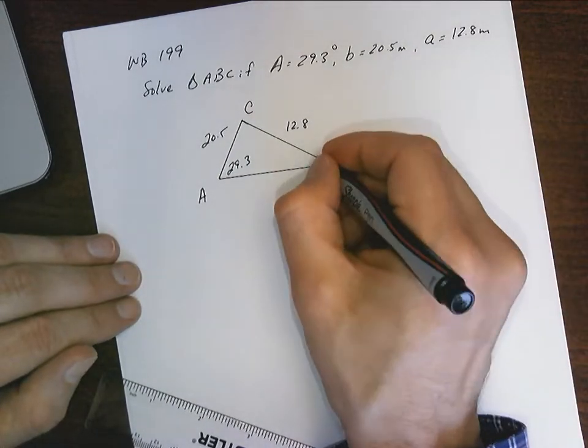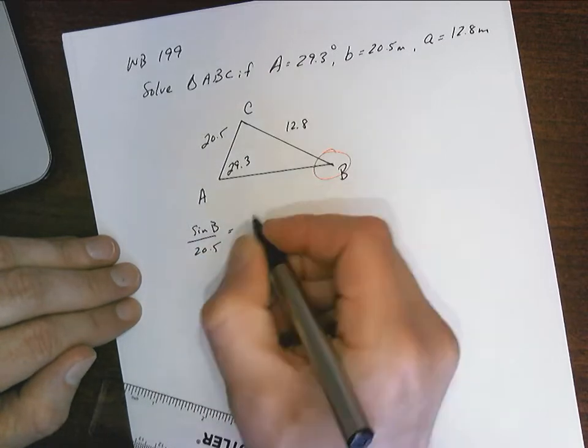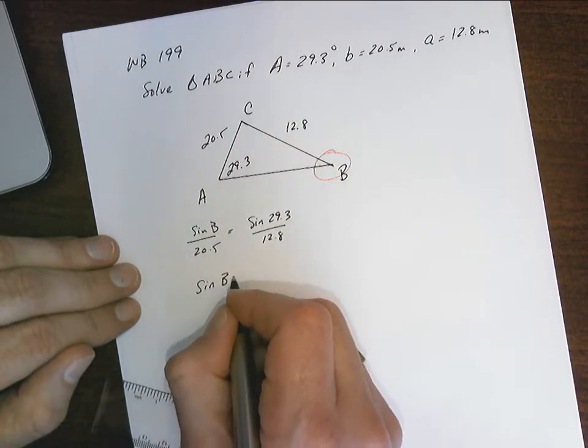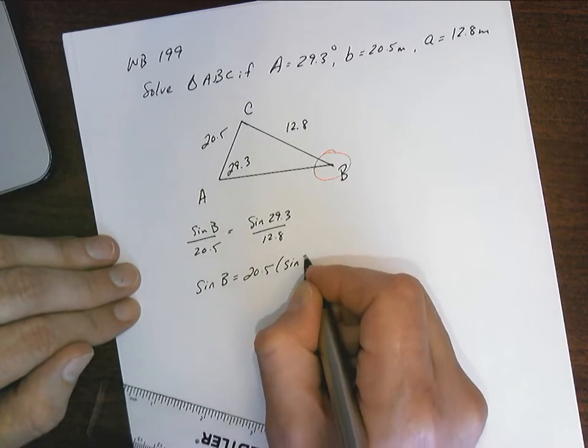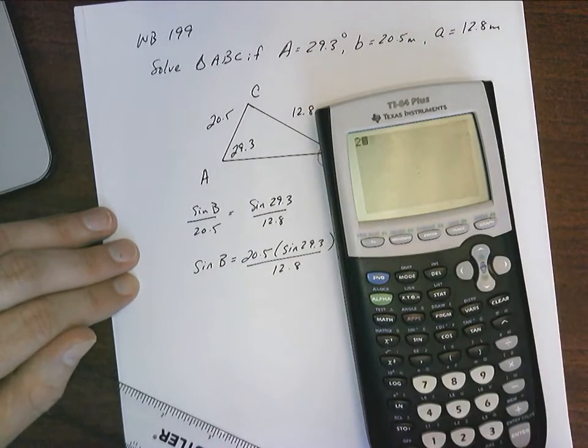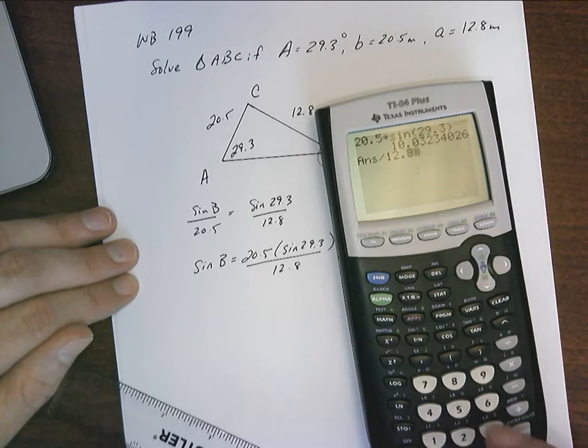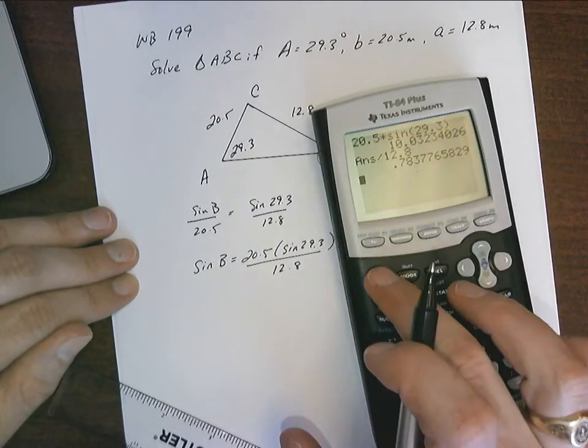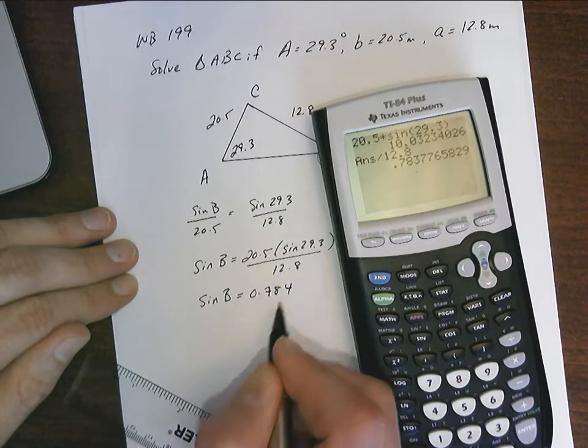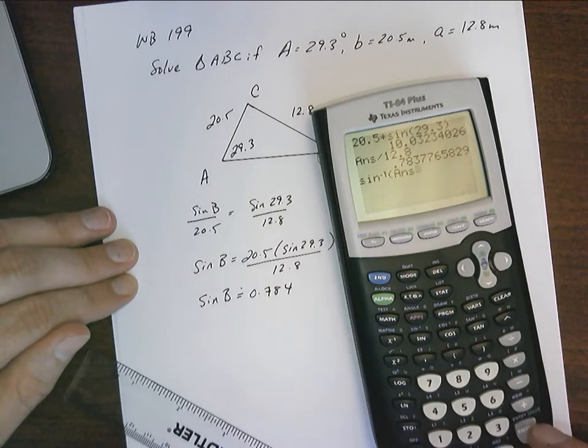The first thing to go after is that angle B. So it's going to be sine B over 20.5 equals sine 29.3 over 12.8. Sine B 20.5, sine 29.3, 12.8. Calculator. 20.5 times sine 29.3 equals divided by 12.8 equals 0.78. So I'll write it in this time. I haven't for a little bit. Approximately.